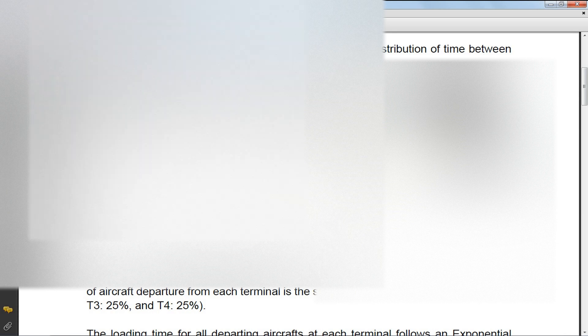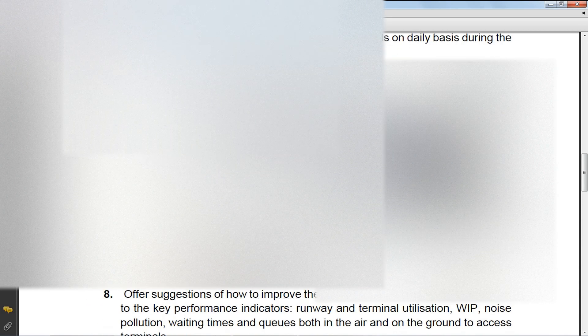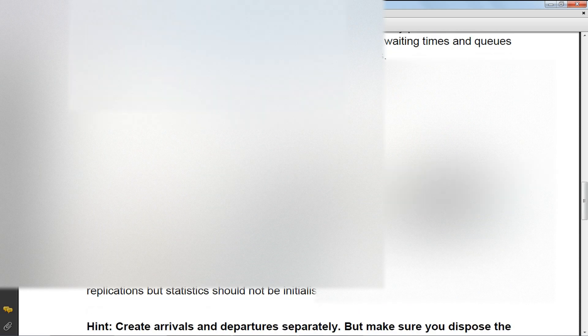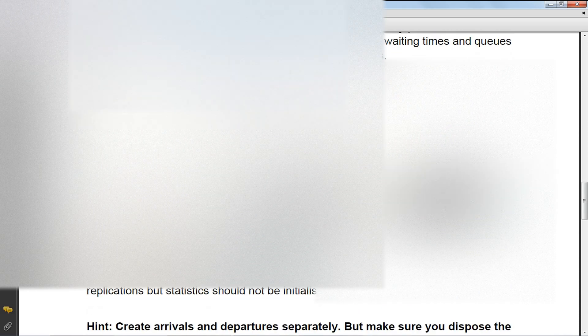This is the given assignment: aircraft arrive at the airport according to an exponential distribution of time between arrivals. An arriving plane waits in the air for a signal from the control unit before they are able to land. The airport has two runways — one for landing and one for takeoff. We have questions one through eight and nine, and the replication length.